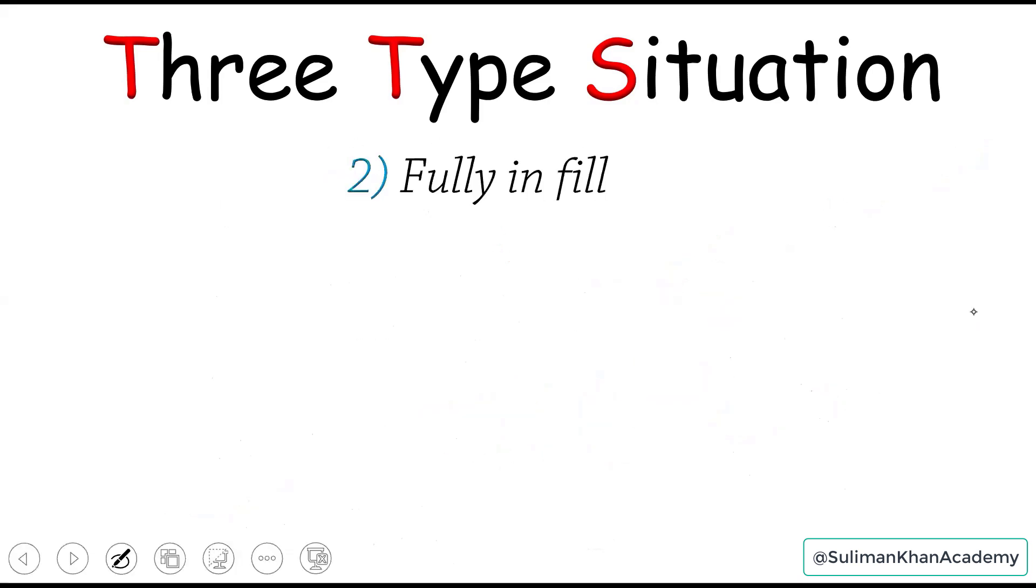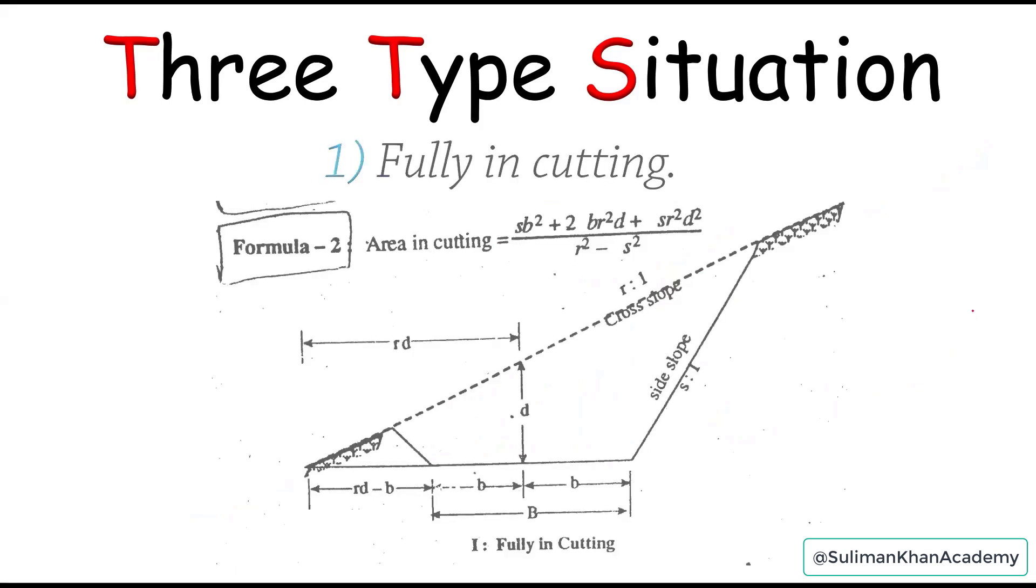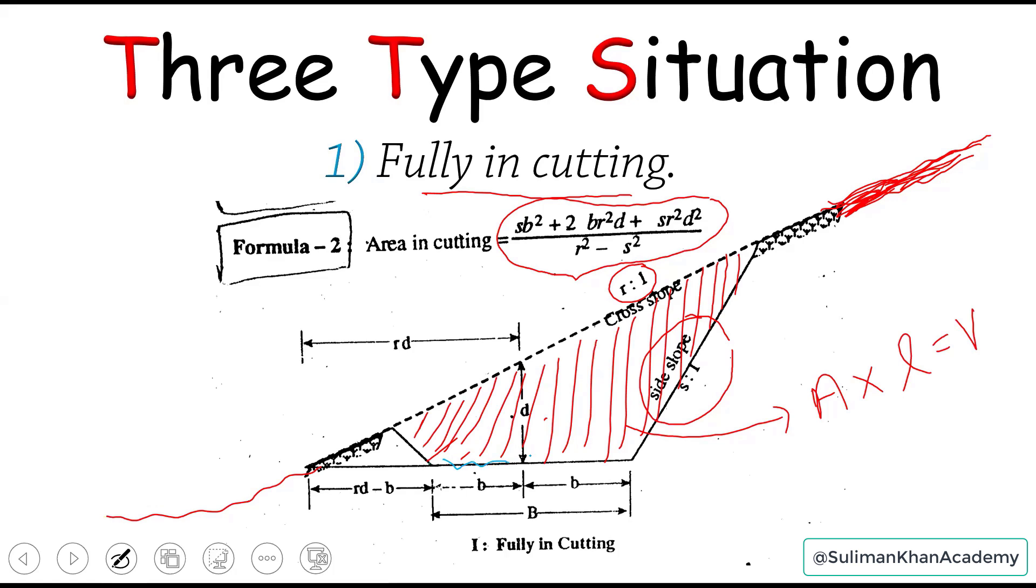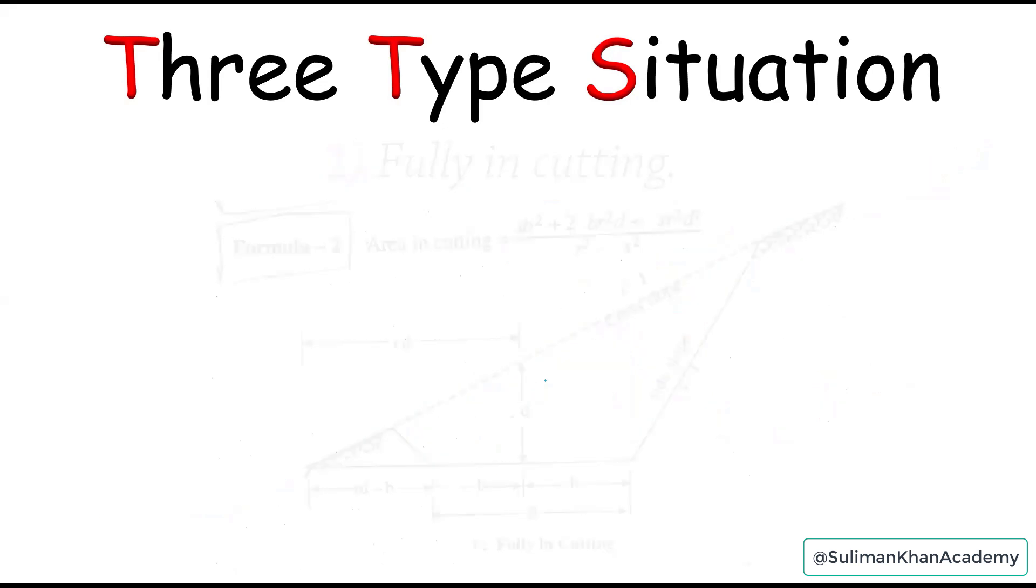We may have another condition such as fully in filling. That time, if you remember, it was just cutting because formation level - let me just make it a little bit clear. As you can see, this is the formation level, which I'm representing in blue. Let's say this is formation level. And as you can see, this is just below the natural ground or you can say below the cross slope. So that means we have to dig this red shade portion.